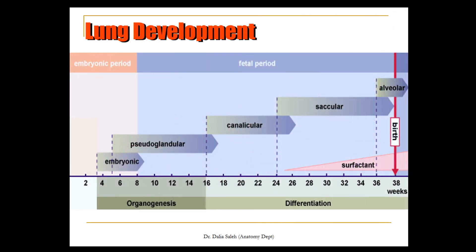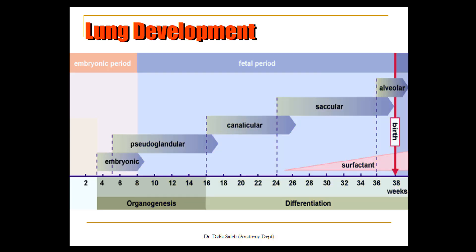For lung development, in comparison to other organs in the body, they start their development in the embryonic period and carry on their development in the fetal period and even after birth. This is because the lung is not functioning during intrauterine life — there is no gas exchange, no breathing. The only function of the lung during intrauterine life is to share in the formation and secretion of amniotic fluid through its epithelial lining cells.